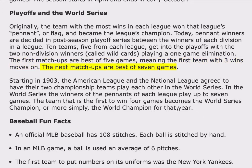Starting in 1903, the American League and the National League agreed to have their two championship teams play each other in the World Series. In the World Series, the winners of the pennants of each league play up to seven games. The team that is the first to win four games becomes the World Series champion, or more simply, the world champion for that year.